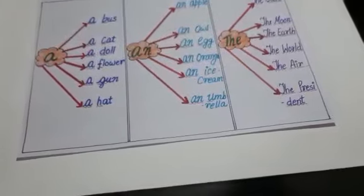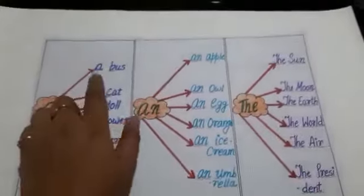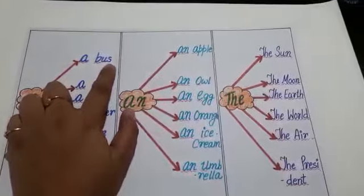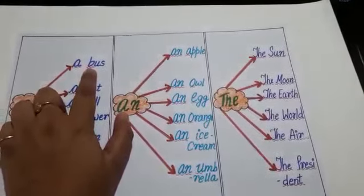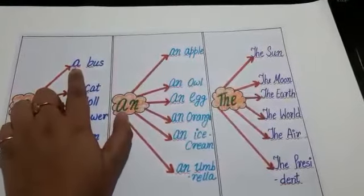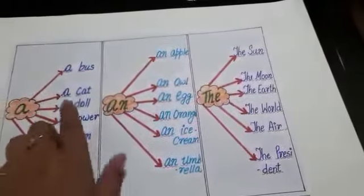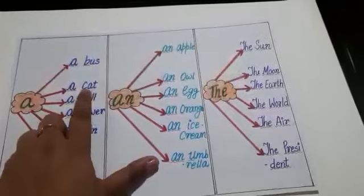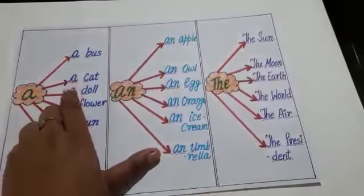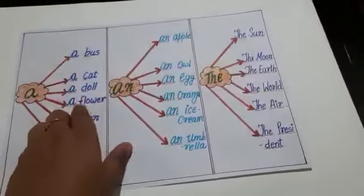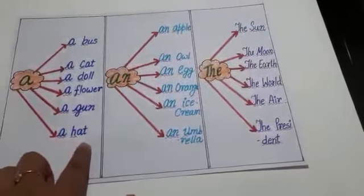Now, we come to the examples of a and the. As you can see, B-U-S, bus. This word is start with consonant B. So, what we have to do? We have to put a in front of bus. A bus. A cat. C is a consonant. So, what we have to write here? A. A doll. A flower. A gun. A hat.